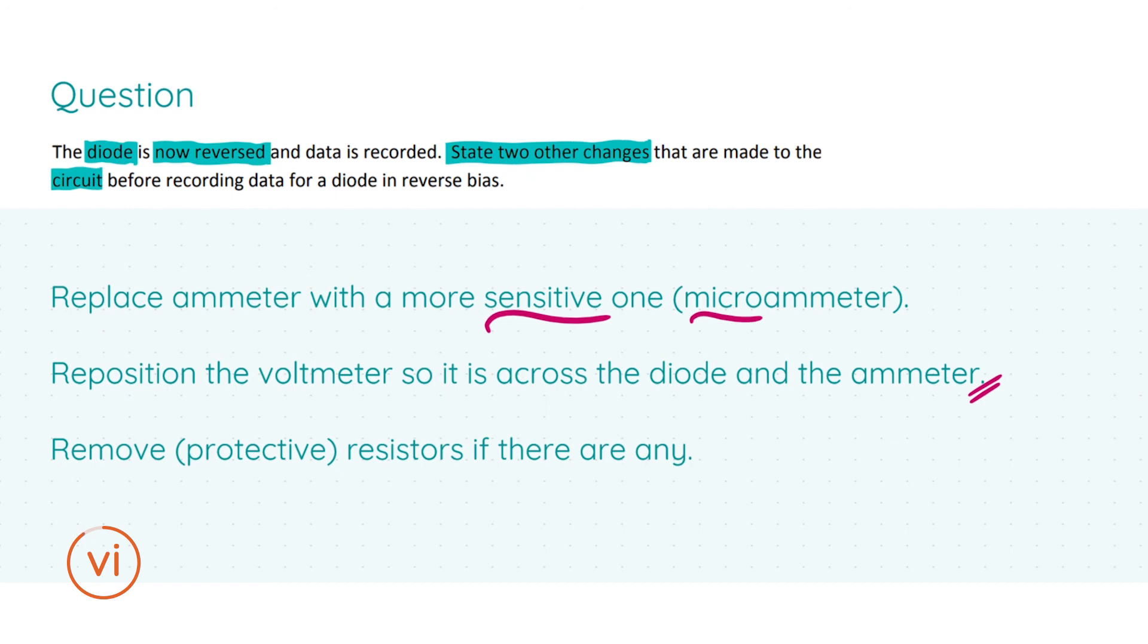We don't want to make it impossible for our sensitive ammeter to measure the current. You needed two changes; I've given three, but you'll be given two marks per correct change—two marks plus two equaling four out of four for this part of the question. And hence we're done.